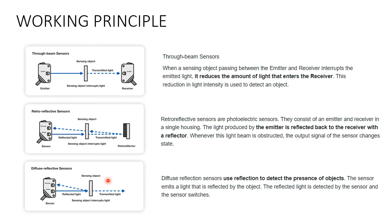Because the intensity of reflected light varies with object properties, the diffuse sensor can produce false alarms. Surrounding ambient light also contributes to errors in this sensor type, so it is not as reliable as the other two sensor types. These are the three basic types — let's now check out some application examples.